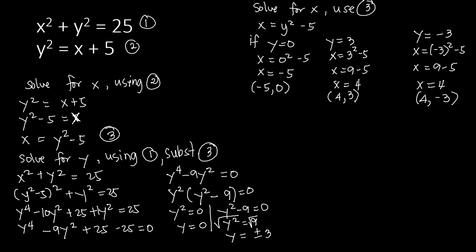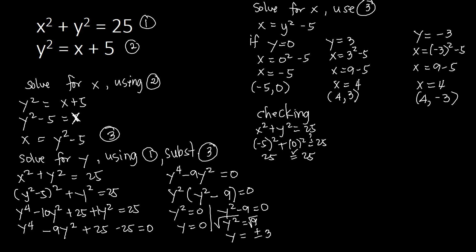Those are the solutions of the system of nonlinear equations. Let's do the checking. For the point (negative 5, 0), using equation 1: negative 5 squared plus 0 squared equals 25 plus 0, which is 25. Yes, that checks out. Using equation 2: 0 squared equals negative 5 plus 5, giving 0 equals 0. Yes, indeed they are equal. So (negative 5, 0) is confirmed as a solution.